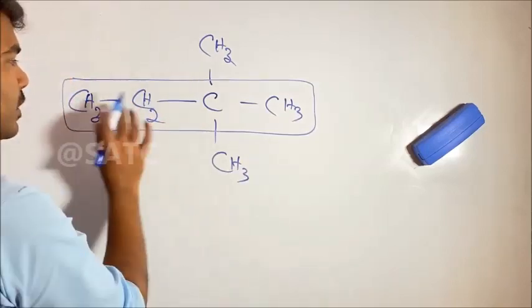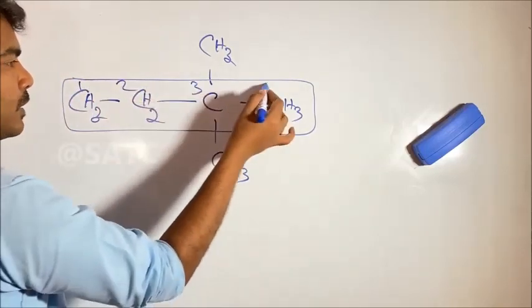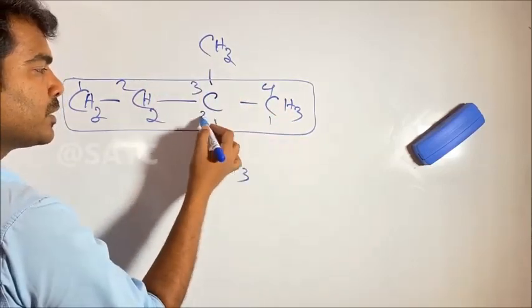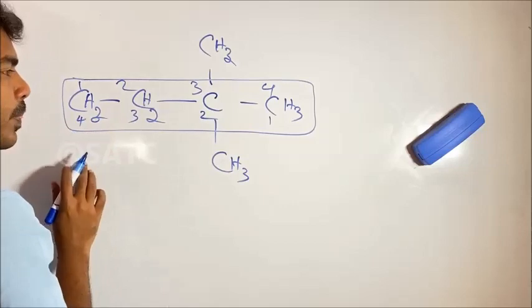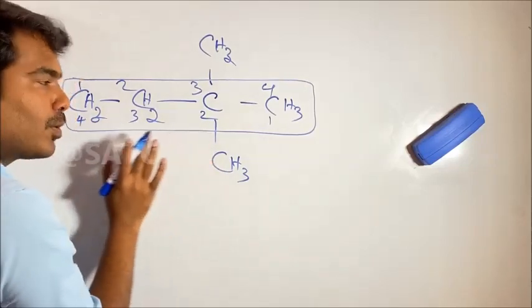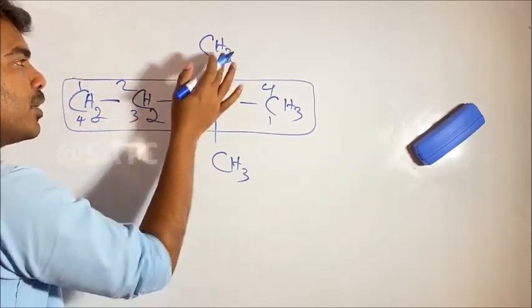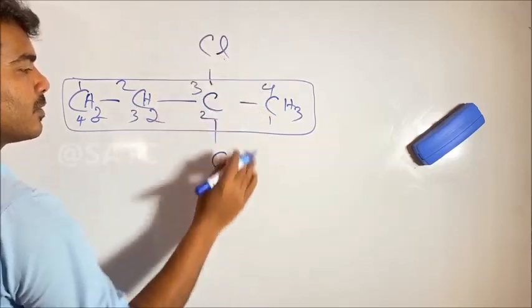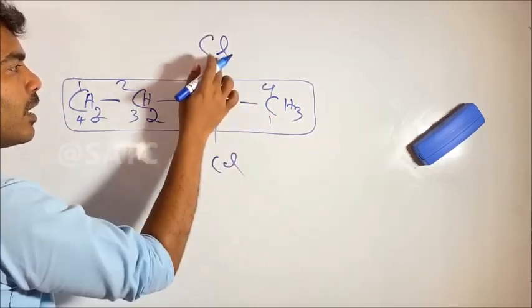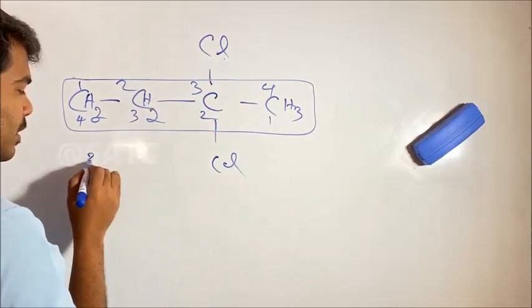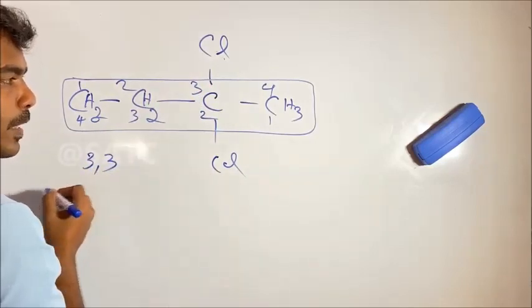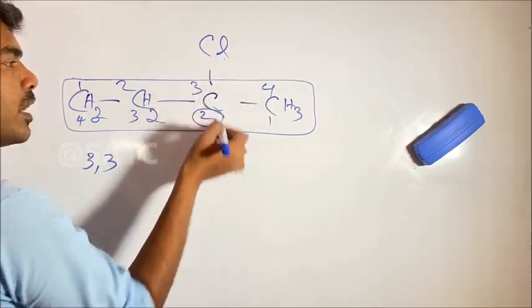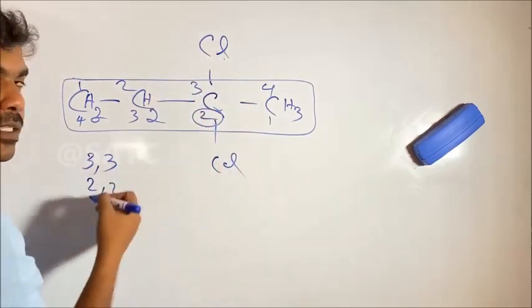Now we number the chain: 1, 2, 3, 4. We check from both sides. From the left side the number is 1, 2, 3 — so Chlorine is at position 3. From the right side, it would be 1, 2 — so Chlorine is at position 2. We give the lowest number, so the position is 2.